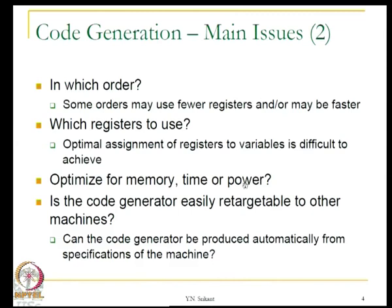Is the code generator easily retargetable to other machines? Code generation is very tricky and very difficult. If we are able to write a specification of the machine for which we want to generate code, and the code generator can be produced automatically from those machine specifications, that is the best scenario. In such a case, we simply have a code generator generator that processes different machine specifications, and we can easily generate code generators for any type of machine. In the absence of that, we will end up writing machine code generators for each machine by hand.